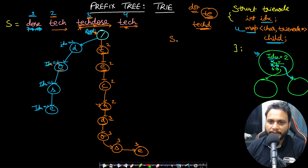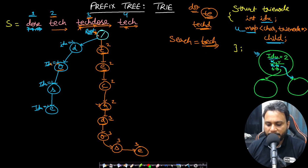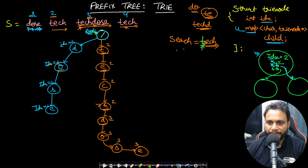Let's say my search word is 'tech.' I will start at the root node, go to 't,' then 'e,' then 'c' — also present — then 'h' — also present. The index is 2, so 2 will be returned as the answer.